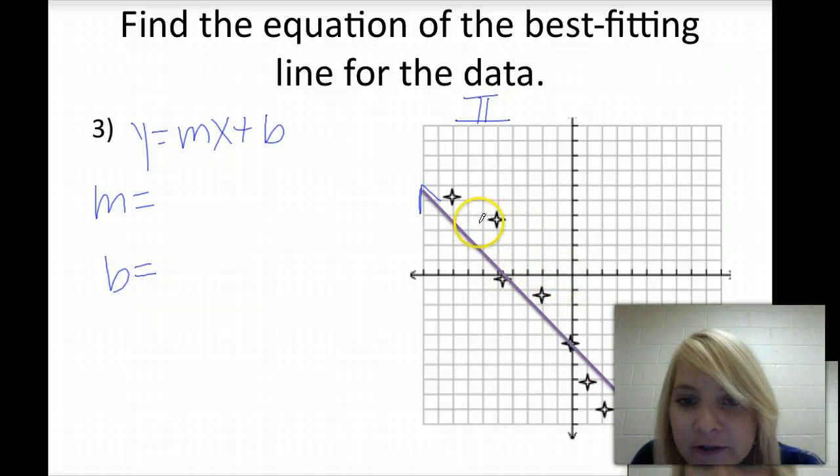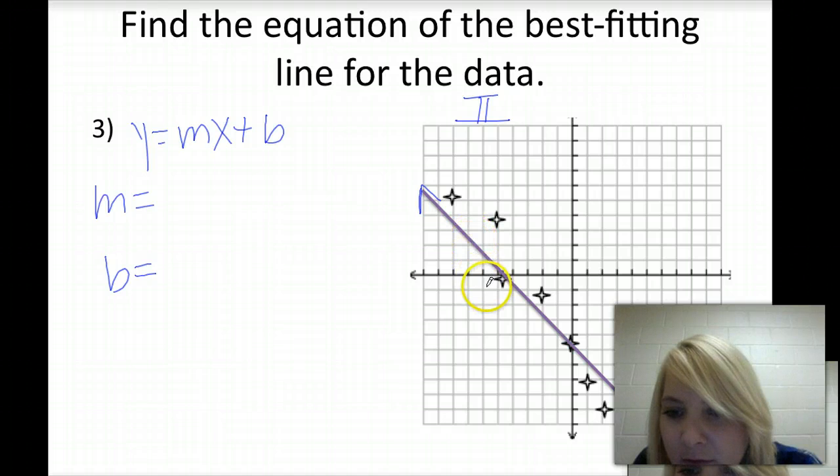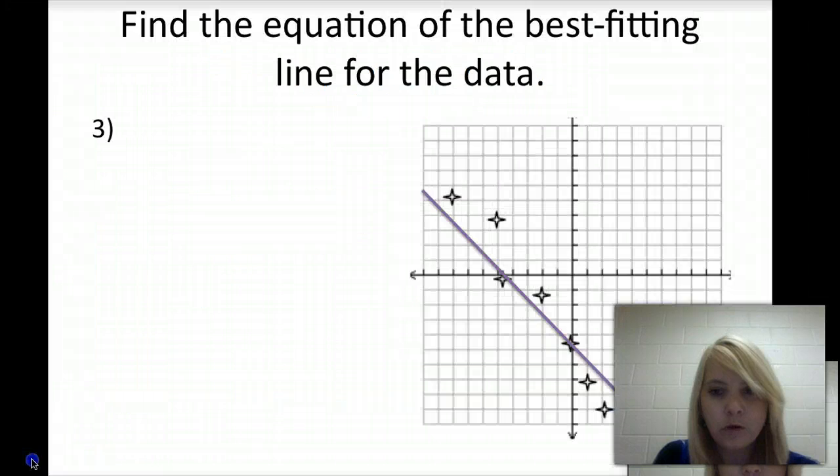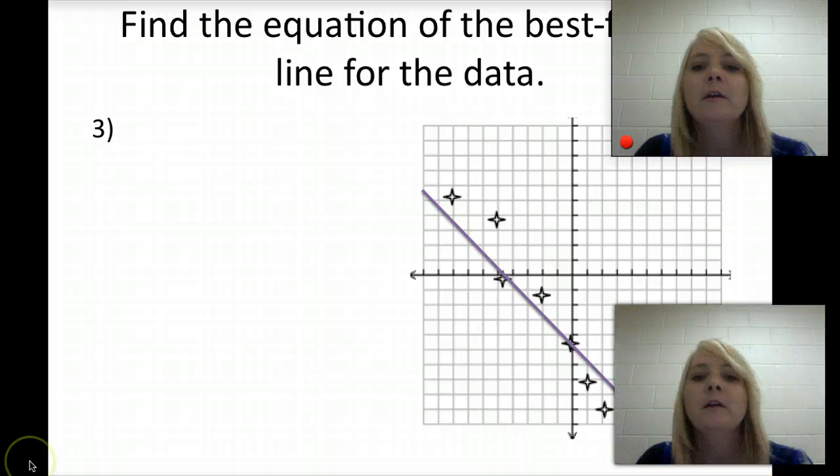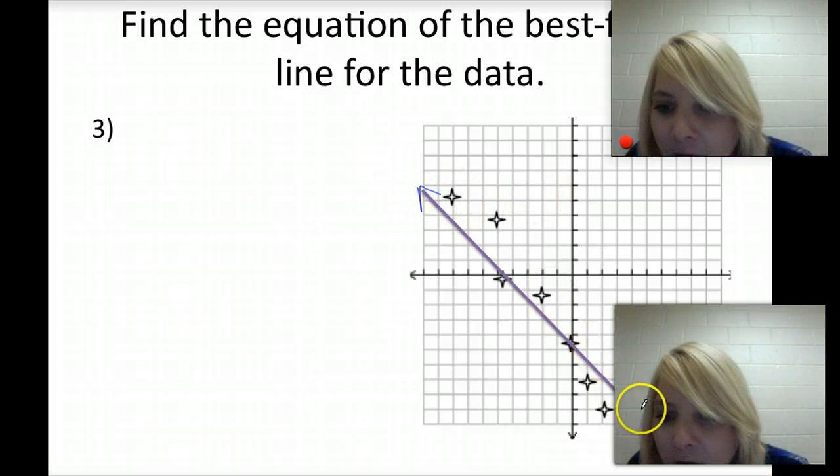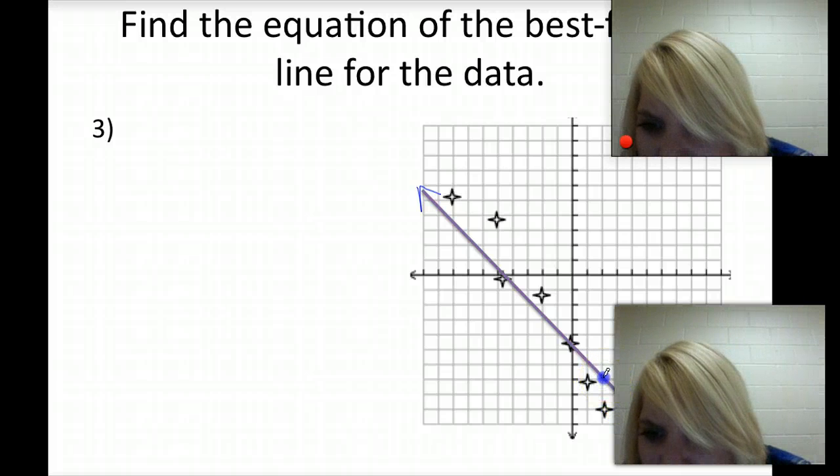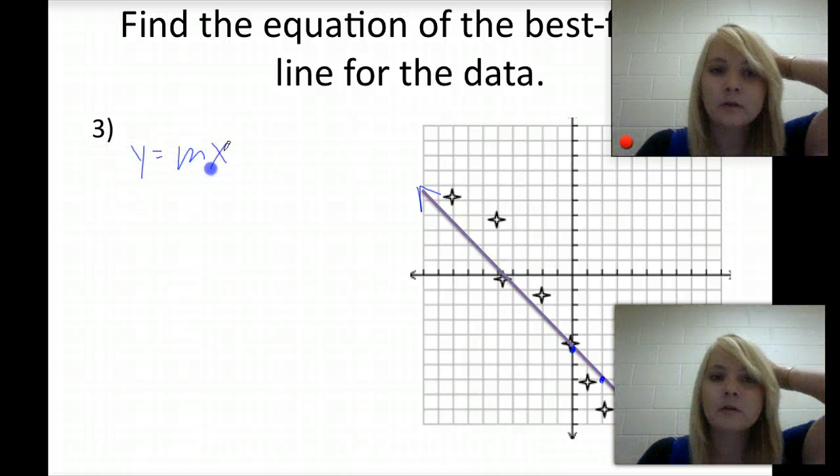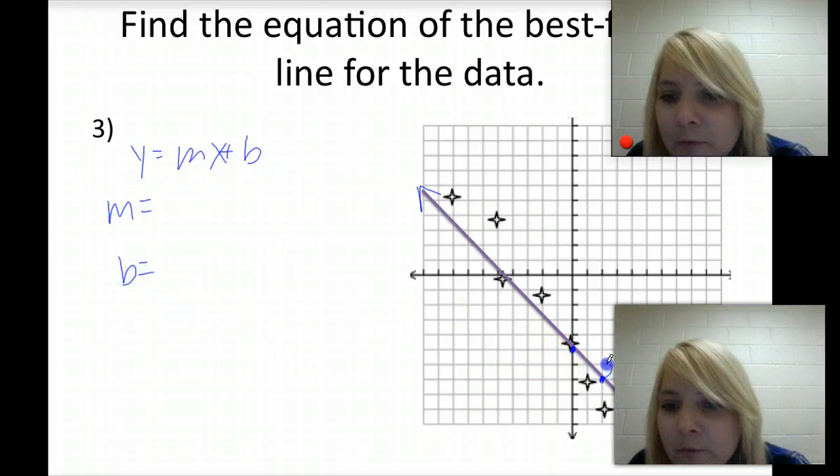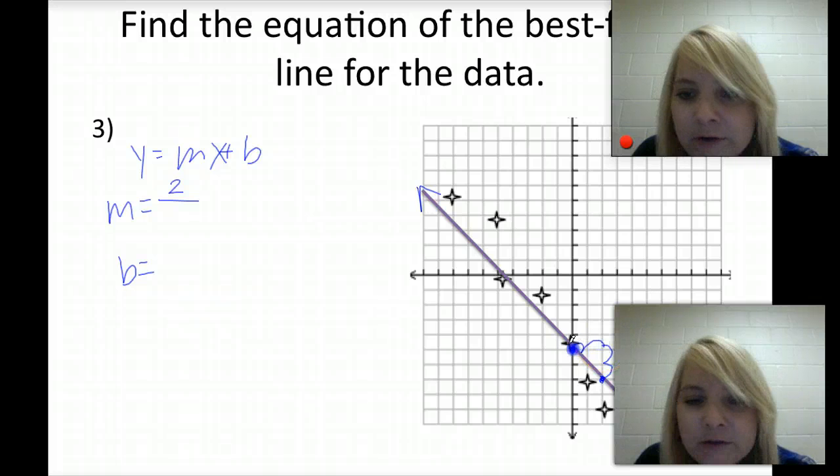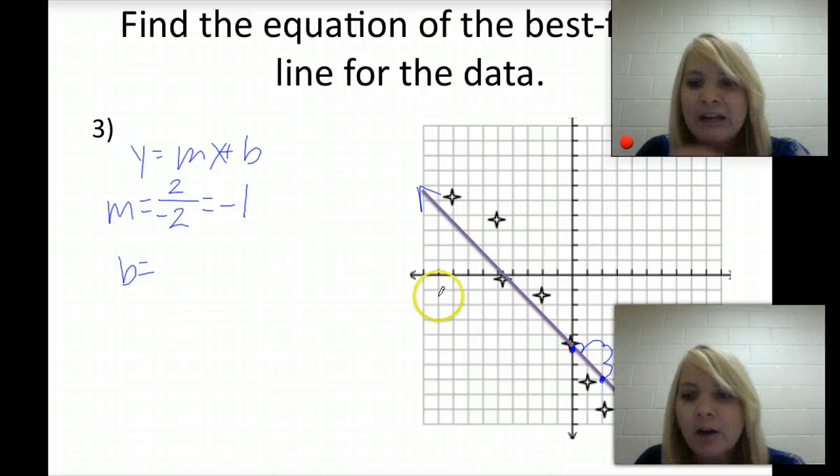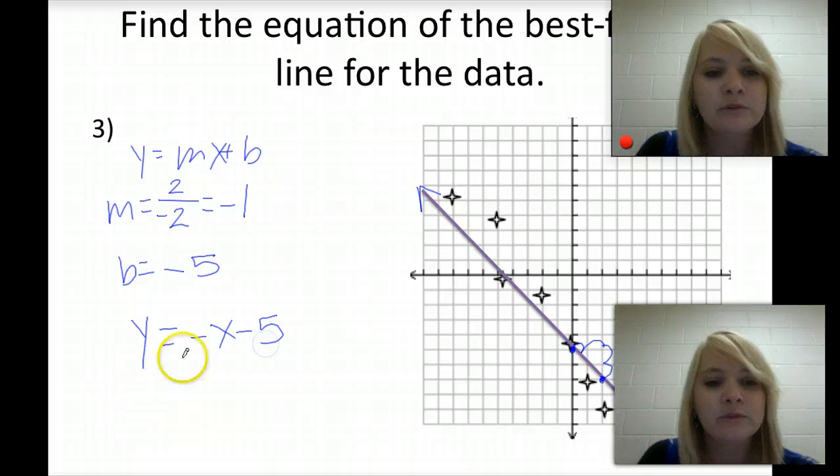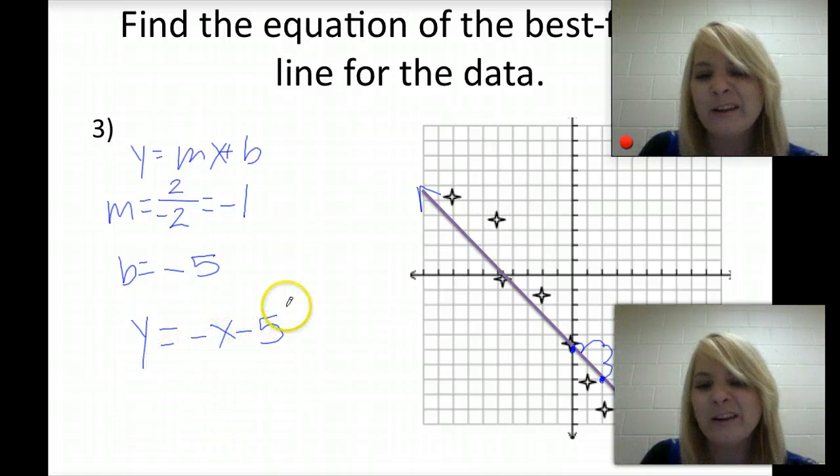And our slope here, once again, we want to find two points. So we hit well on the points where we appear to cross here, and then we're very close to that ordered pair there. So our slope, we go up 2, and then we run 1, 2. And since we run to the left, it'll be negative. So our slope is about negative 1. And our y-intercept crosses at negative 5. So our equation is y equals negative x minus 5, which keep in mind we don't have to write that negative 1 since there's an understood 1 to be there.